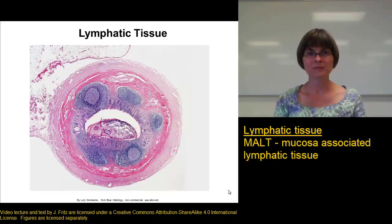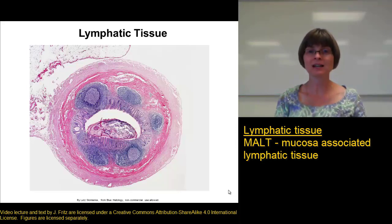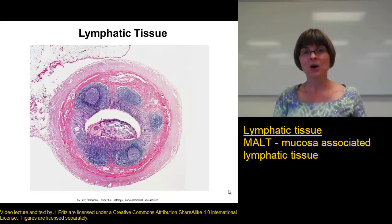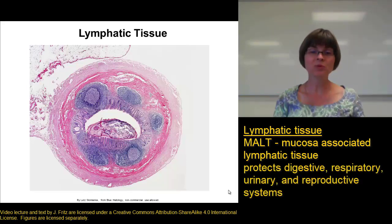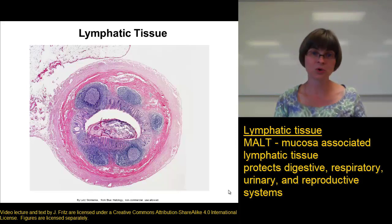The first type is called MALT — mucosa-associated lymphatic tissue. We find this in areas of the body lined with mucous membranes, including the respiratory system, digestive system, urinary system, and reproductive systems. The MALT helps protect those body systems, which are open to the outside, from anything nasty that might work its way through the mucosa. It will encounter the lymphatic tissue, which can destroy it or at least activate the immune system to mount a better defense.